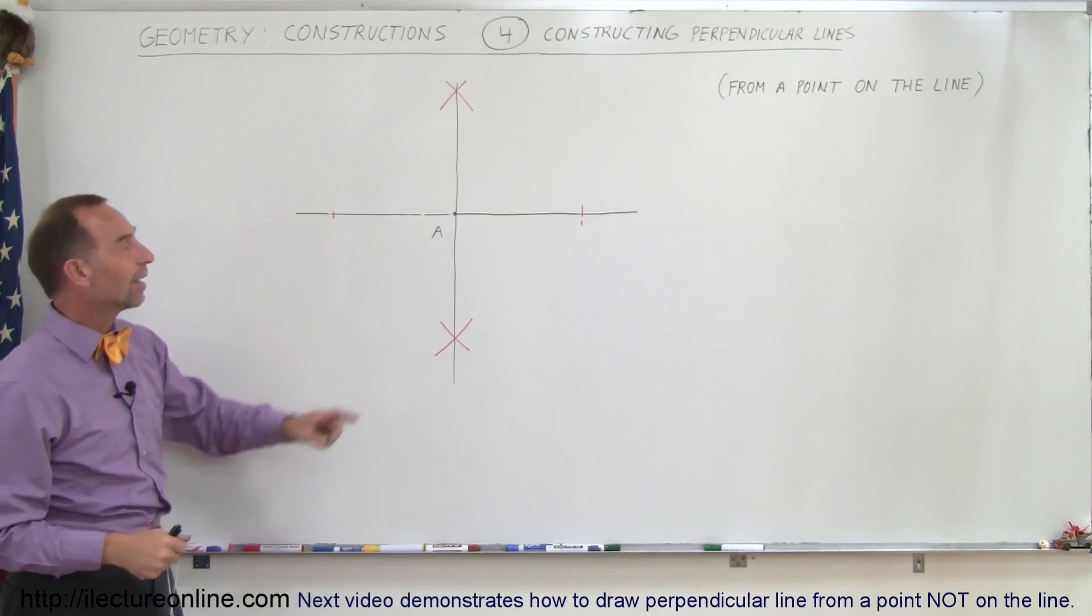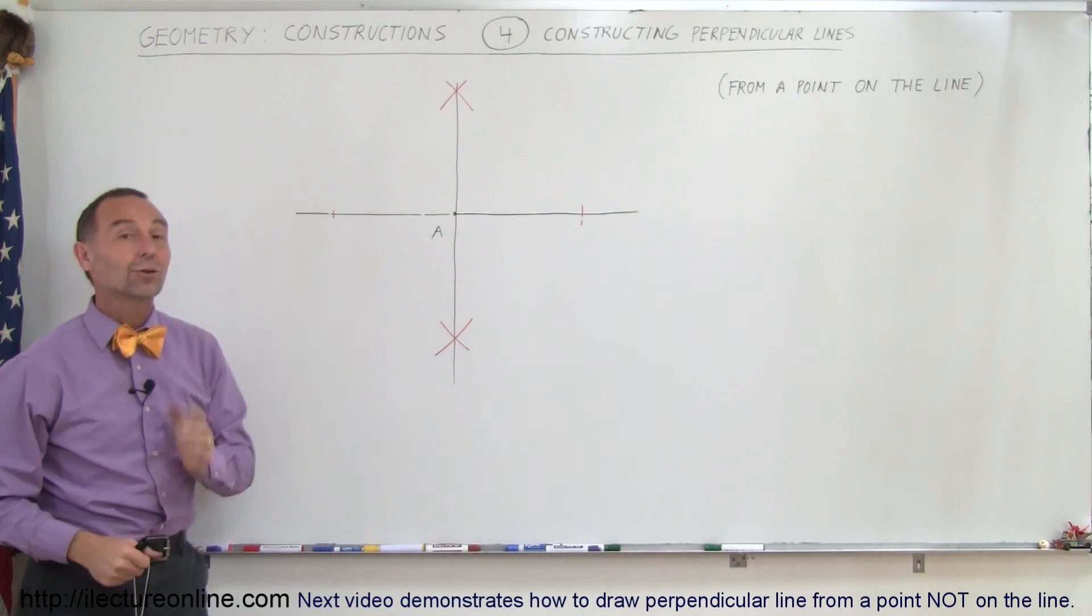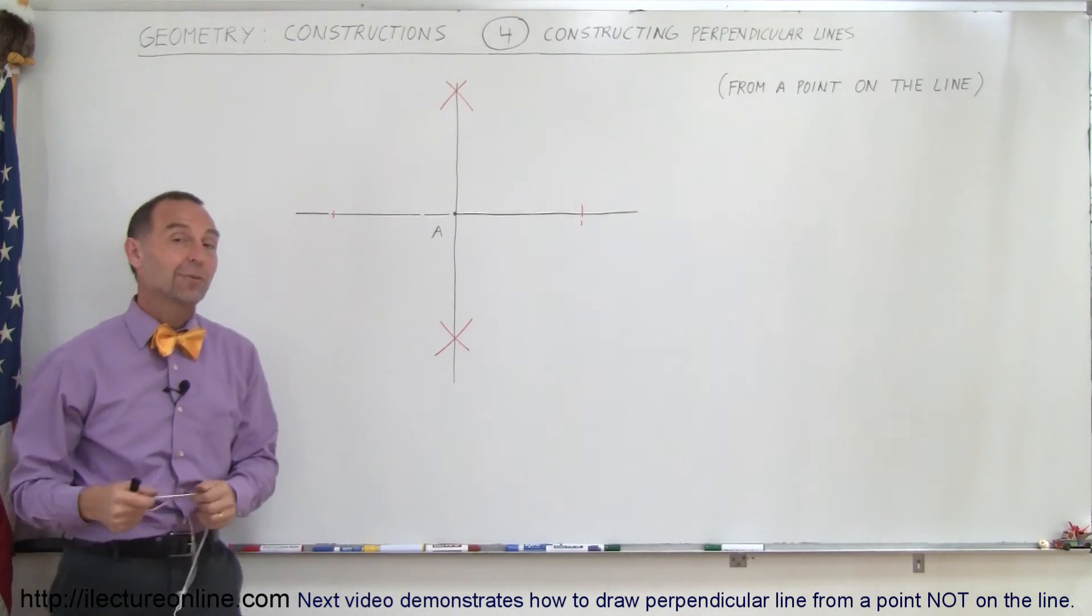And that's how you draw perpendicular lines when you have a point right on the line through which you want the perpendicular line to go. That's how it's done.